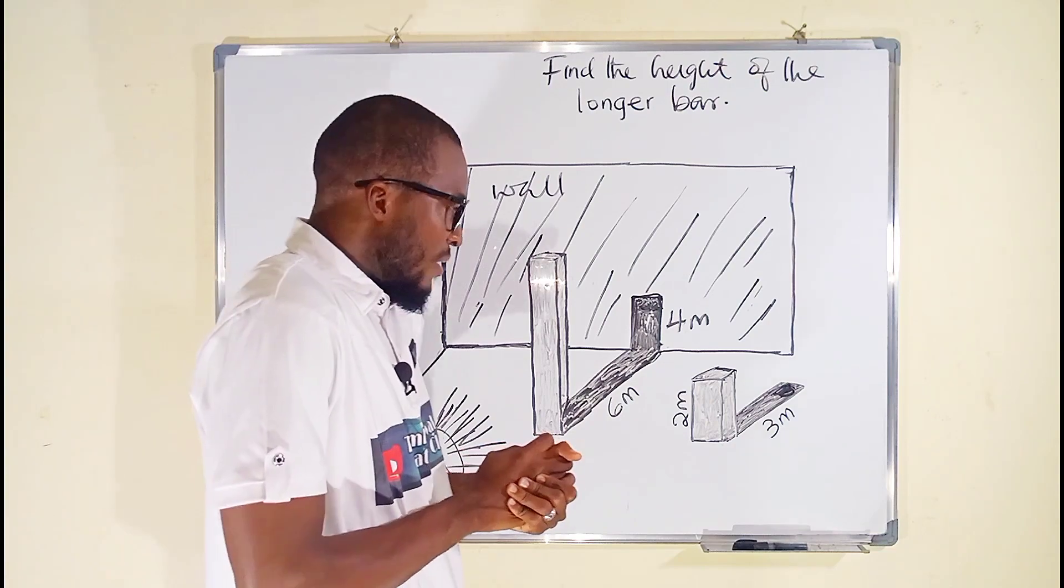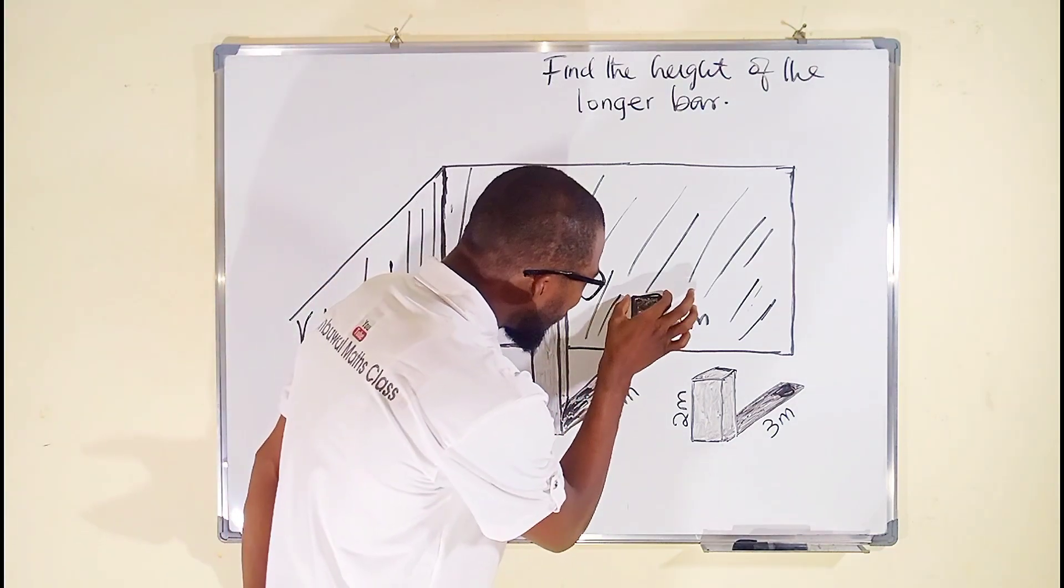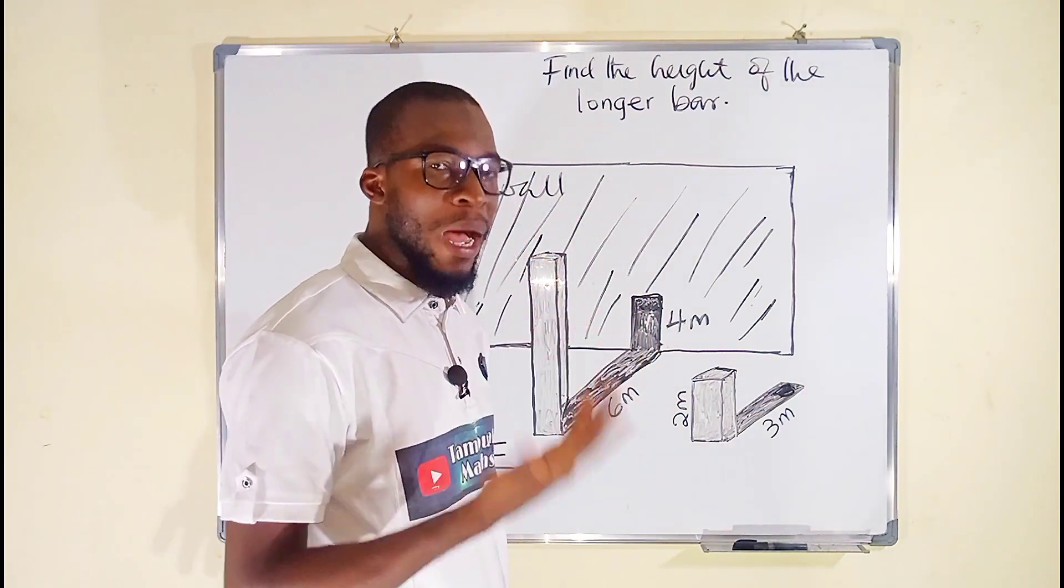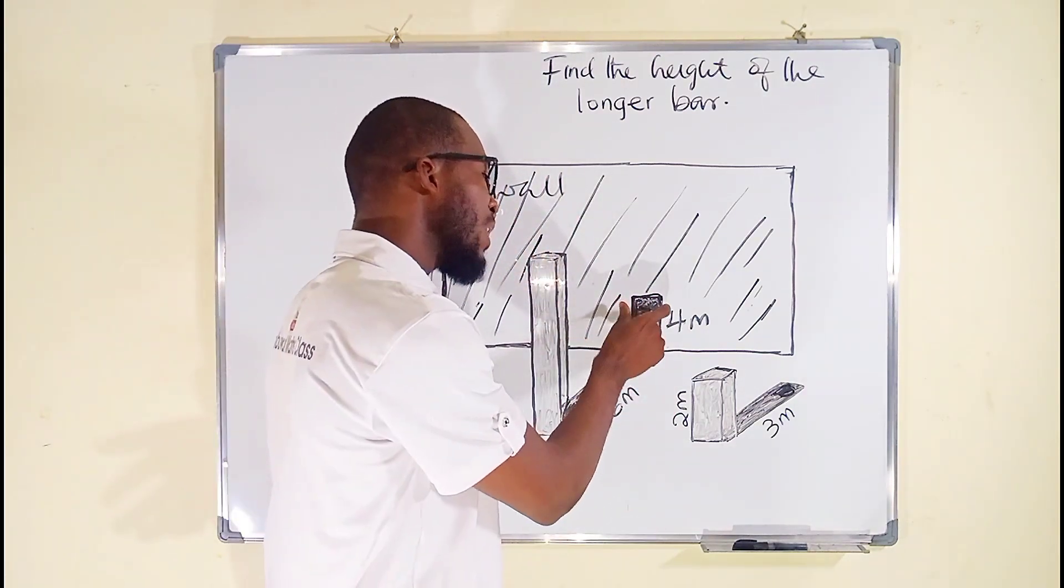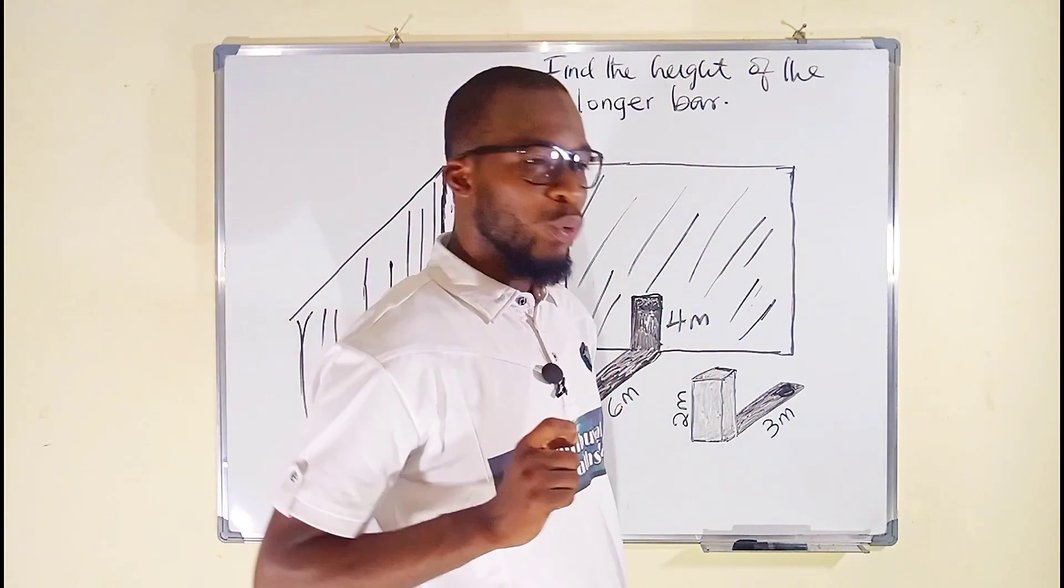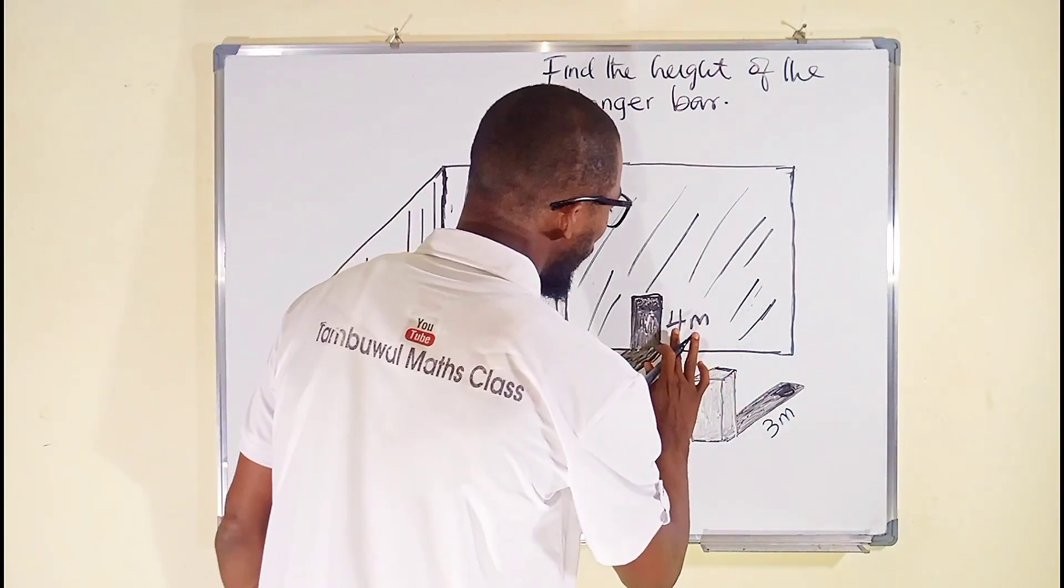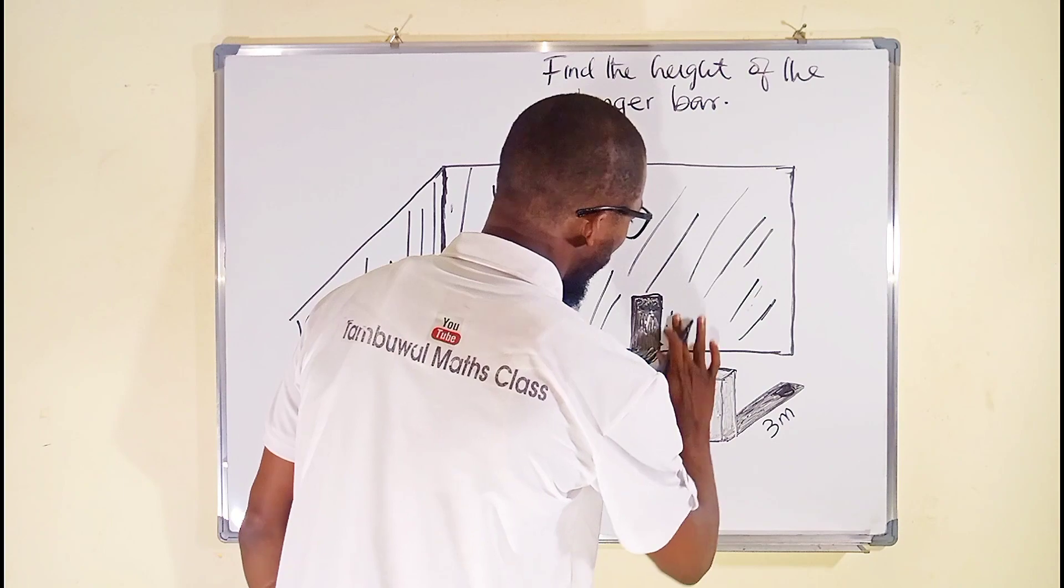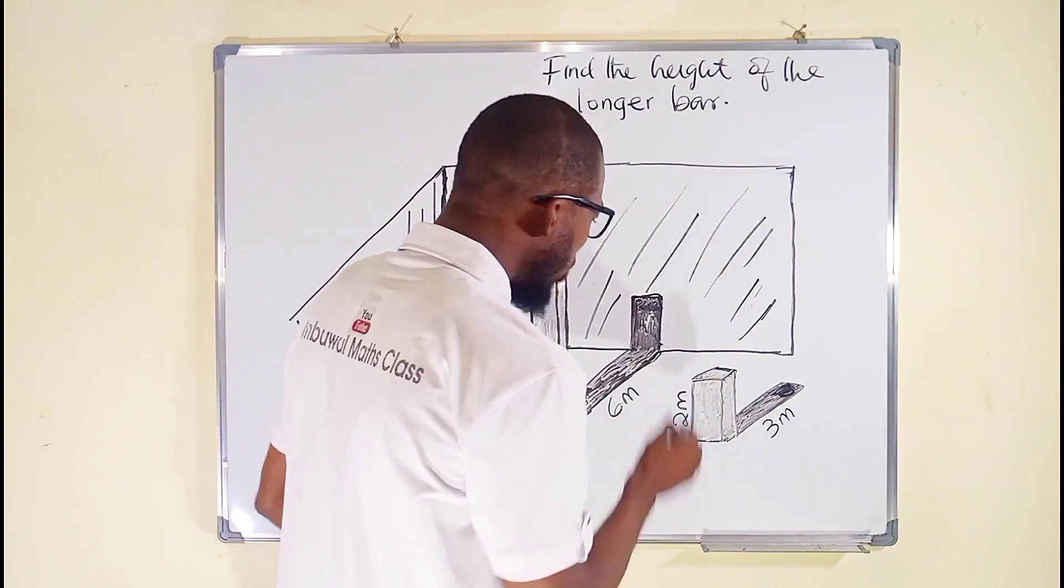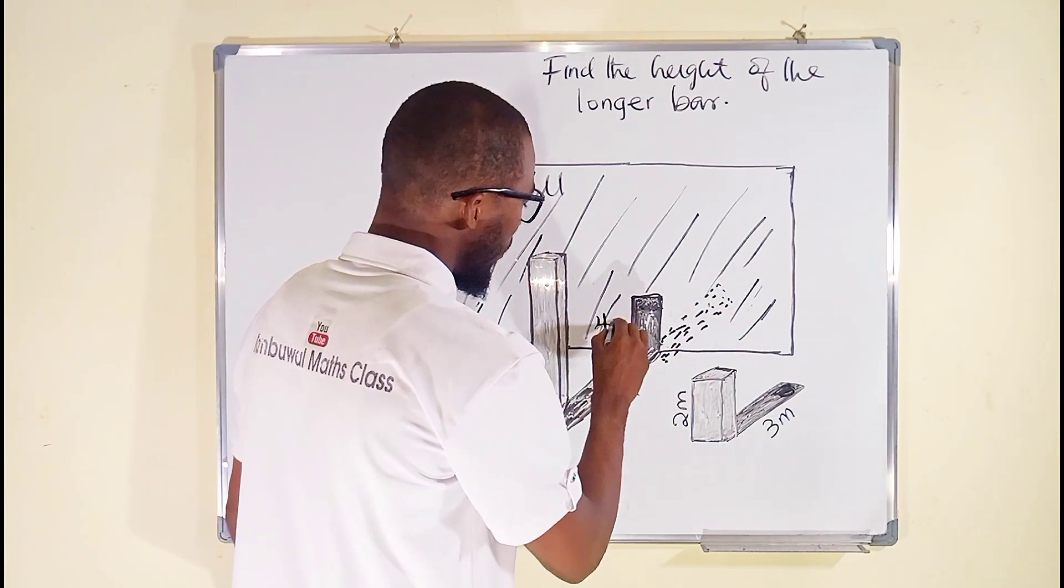So we are going to pretend something here. We are going to assume this four meter shadow on the wall to be also another bar. So if it is a bar, if you should cast a light on it, it is going to produce a shadow as well. So that shadow that is going to be produced, we are going to let it be equal to x because we don't know it. So let us have an imaginary shadow.